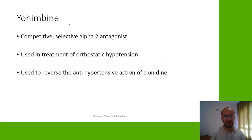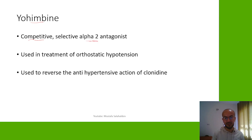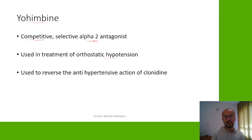Finally, let's talk about yohimbine. Yohimbine is a competitive, selective alpha-2 antagonist, so it has less effect on alpha-1 and more effect on alpha-2 receptors. It is used in the treatment of orthostatic hypotension because it increases blood pressure. It is also used to reverse the antihypertensive action of clonidine.